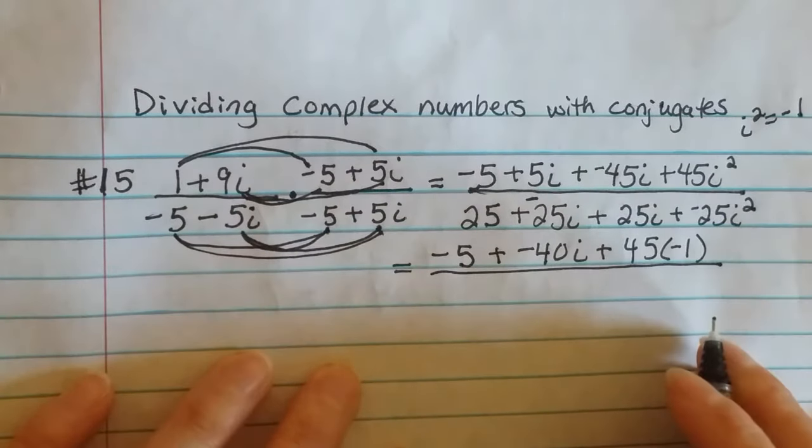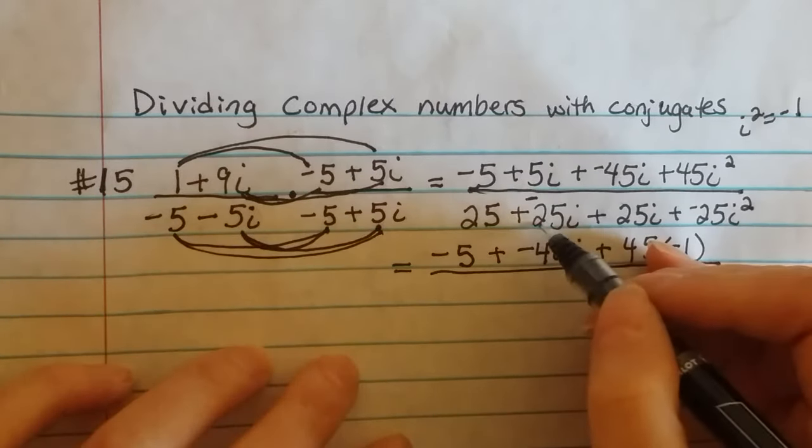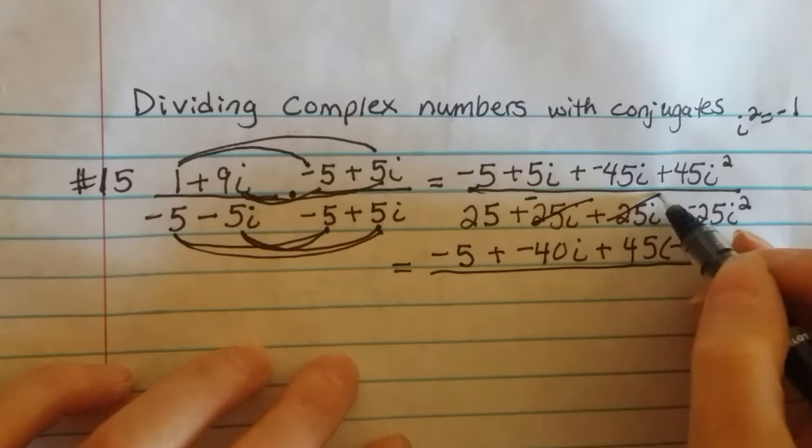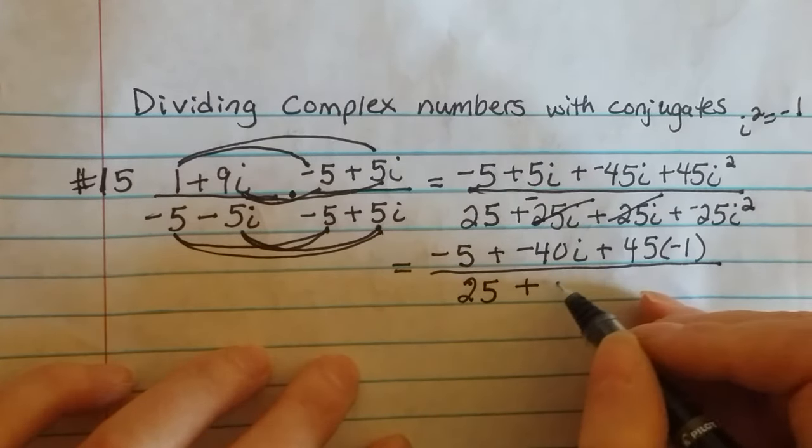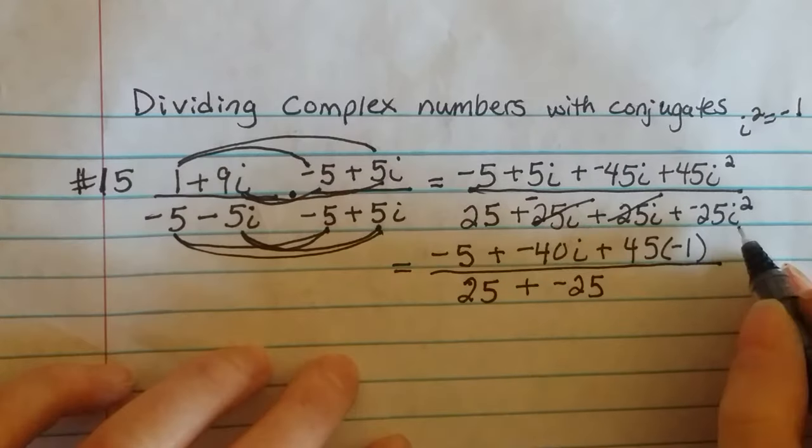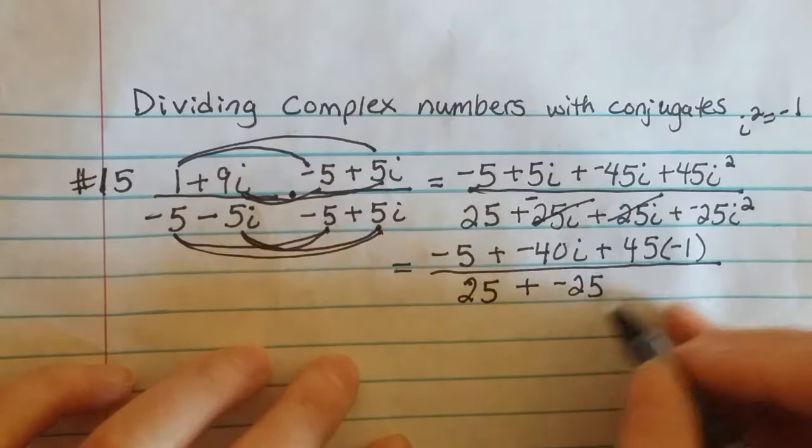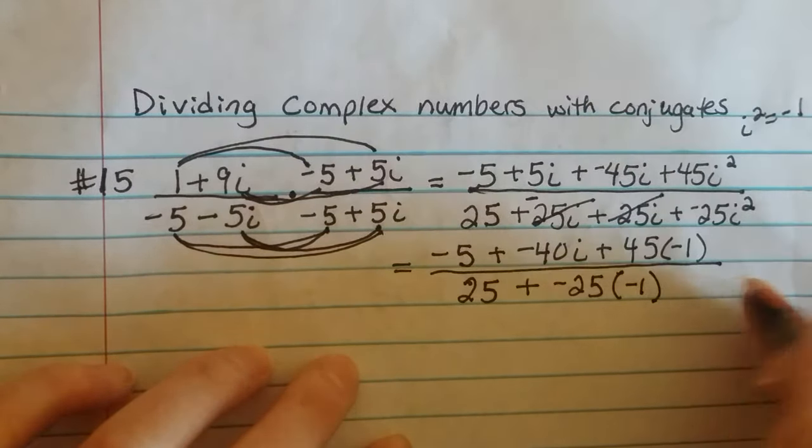Then I'm going to simplify a little bit better on the bottom. So these are going to actually cancel out. So I'm going to have 25 plus -25 and i² is -1. So I'm going to plug in -1 right here.